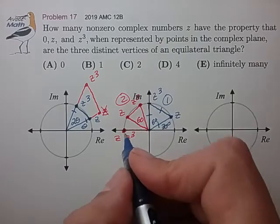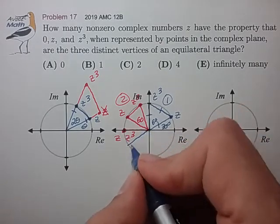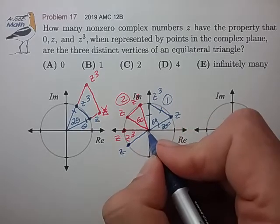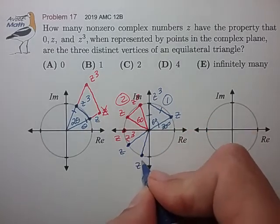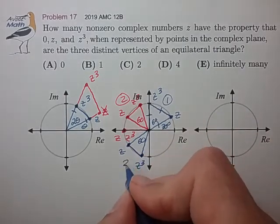So now what happens when z gets past 180 degrees? z cubed will race ahead once again. And at some point, we should be able to form another 60 degree angle to form our third solution.